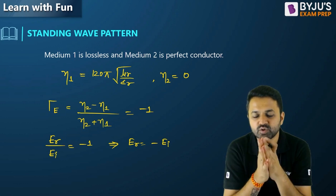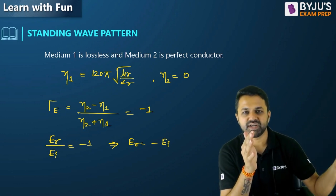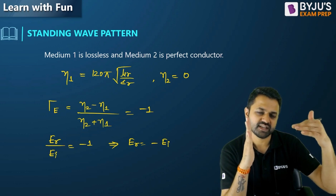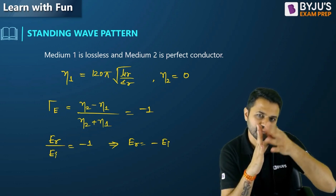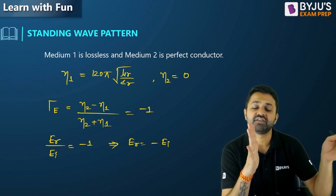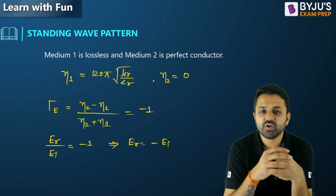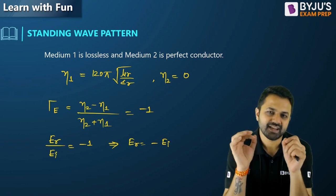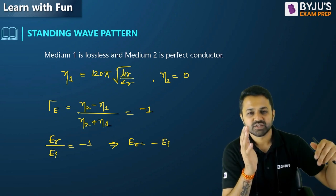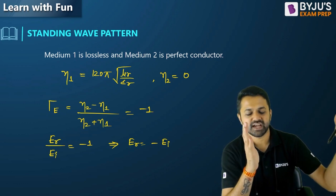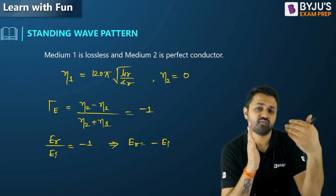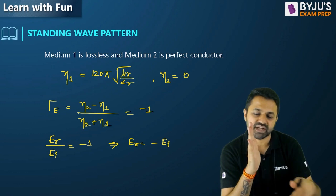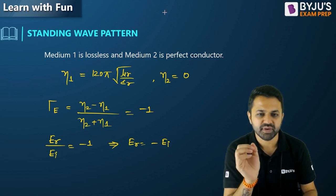Whenever there are two media, the wave starts traveling in the first medium and when it reaches the boundary it is completely reflected, because there is no electric field inside a perfect conductor. So the electric field traveling from medium 1 does not reach medium 2 — it is completely reflected back into the same medium.